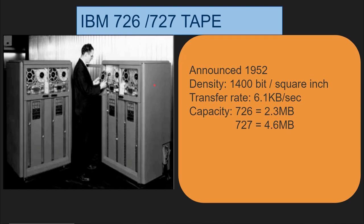This is a picture of the IBM 726 tape drive. It's so ancient it almost looks futuristic. These are two tape drives here, each capable of loading two reels. It was announced in 1952 and the density back then was 1,400 bits per square inch. The transfer rate was just a very modest 6.1 kilobytes per second. The capacity for the 726 model was 2.3 megabytes, and later on densities were improved on the 727 model to 4.6 megabytes.